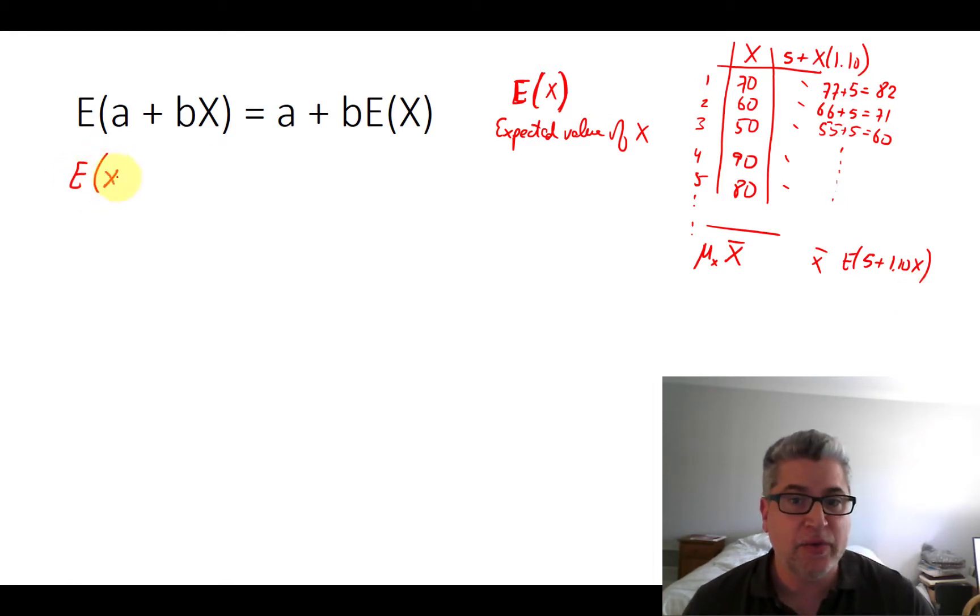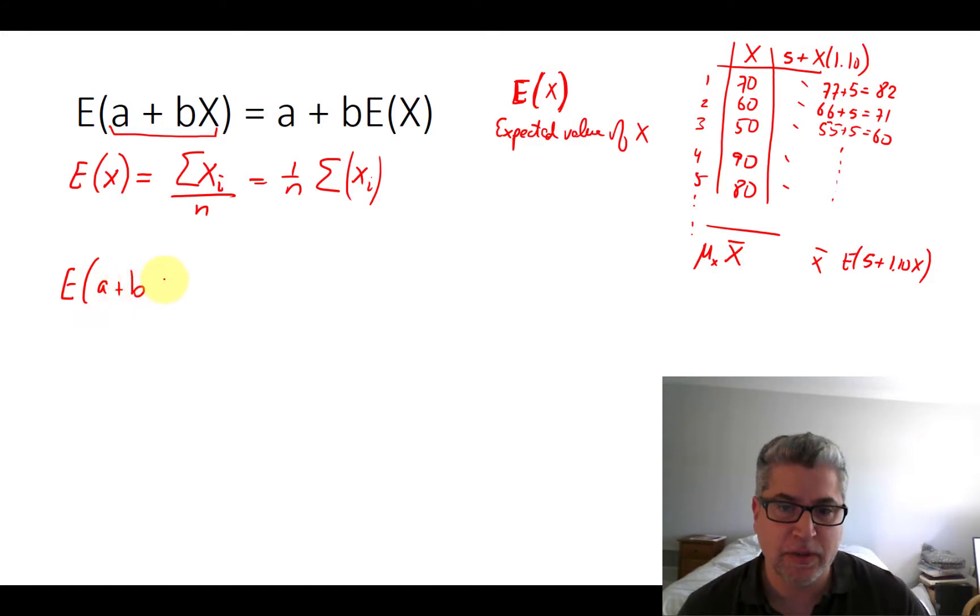The expected value of any variable x is just the average. So it's going to be useful to just think in terms of the formula for an average. You take each observation, each score here, and you add them up, and then you divide by the total number of exams. Let's apply the same idea. Let's apply this formula to the transformed scores or the transformed variable.